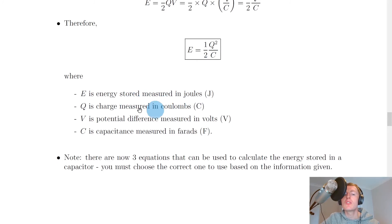Where e is energy stored in joules, q is charge measured in coulombs, and v is potential difference measured in volts, and lastly, c is capacitance measured in farads.